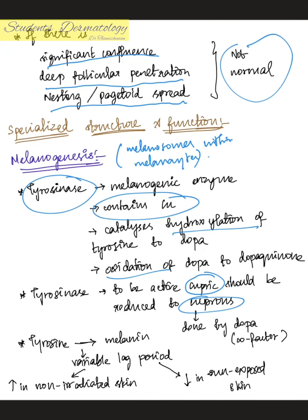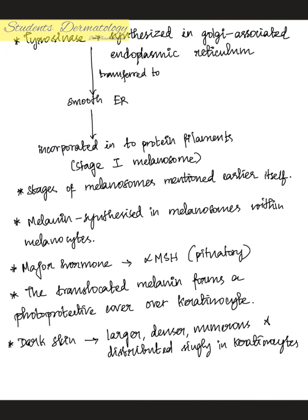Tyrosinase conversion to melanin has a variable lag period. This lag period is decreased in sun-exposed skin, meaning melanin is produced sooner and in greater amounts. In non-irradiated skin the lag period remains normal or increased. Tyrosinase is synthesized in the Golgi-associated endoplasmic reticulum, transferred to the smooth endoplasmic reticulum, and incorporated into protein filaments.